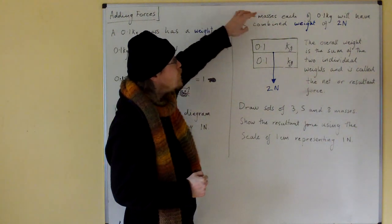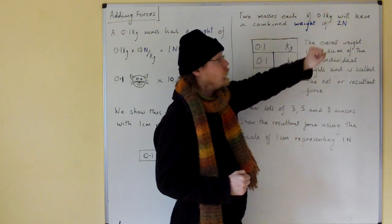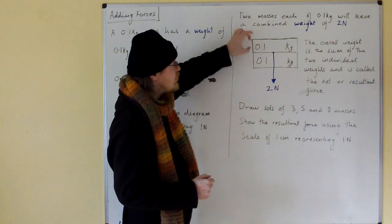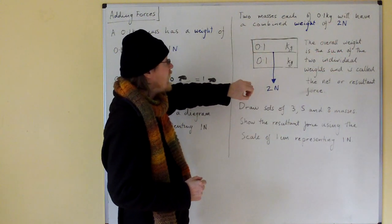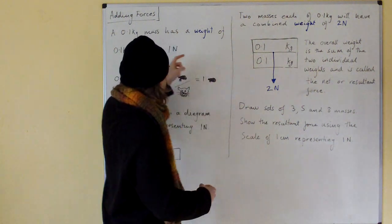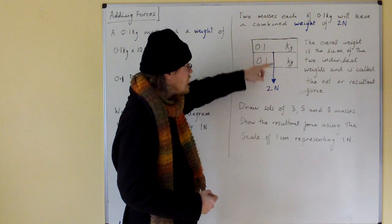Two masses, each of 0.1 kilograms, will have a combined weight of two newtons. So if we stack two of these masses on top of each other, then they will have a combined weight of one newton plus one newton is two newtons.